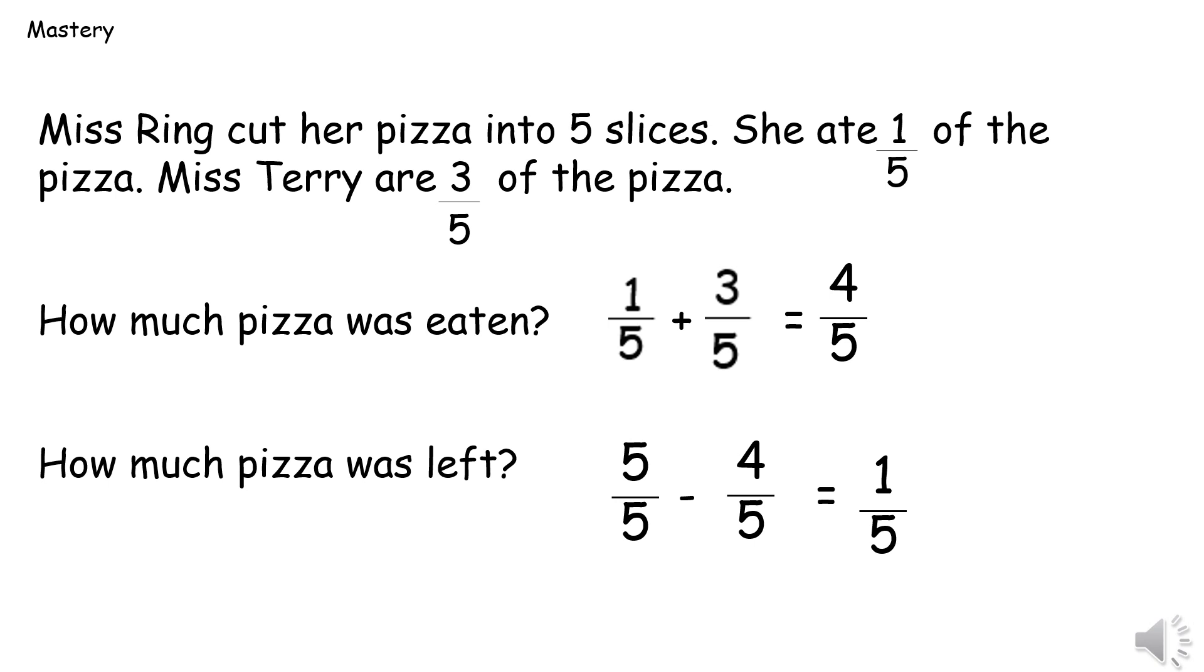So Miss Ring ate one fifth, and Miss Terry ate three fifths. So the number sentence would be one fifth add three fifths equals four fifths. So four fifths of the pizza was eaten.